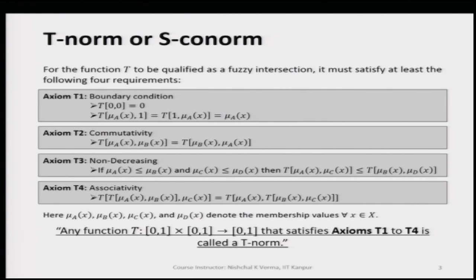There are four axioms related to T-norm or S co-norm: axiom T1, T2, T3, and T4. Axiom T1 is the boundary condition. This means that T-norm of 0 and 0 - where both 0s are membership values - gives us 0. If we apply the T-norm on two membership values that are both 0, the lowest possible values, this returns 0.